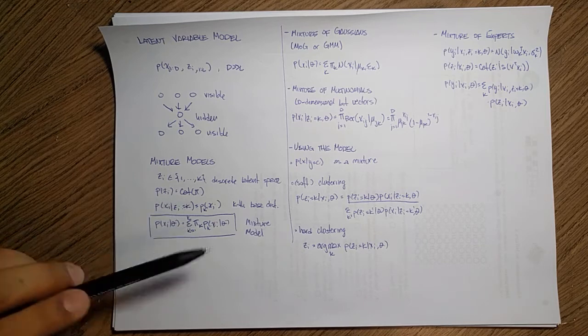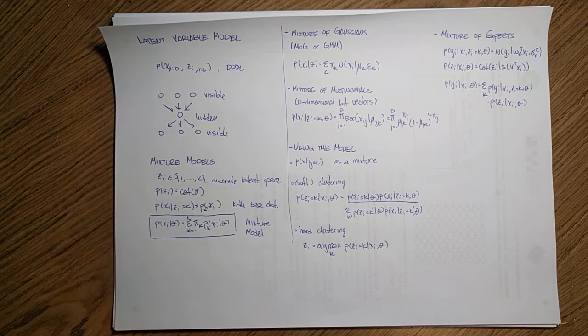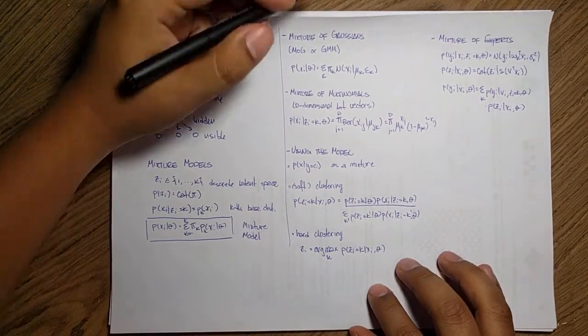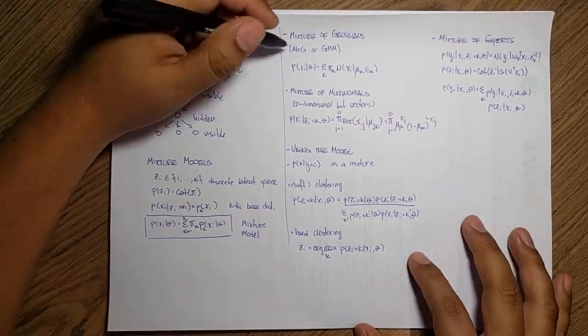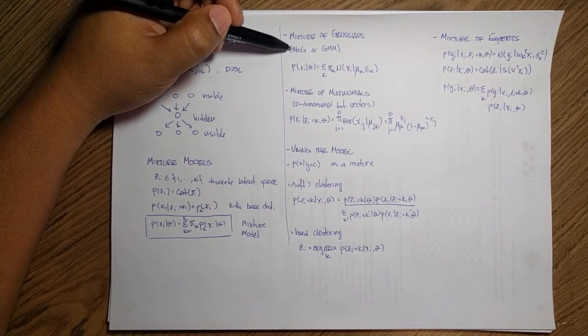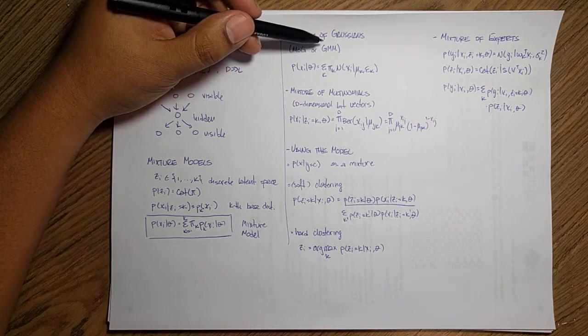And yeah, that's it. As you see, it's a really simple idea, but really useful. One of the most used models is this mixture of Gaussians or MOG or GMM, depending on how do you want to call it. Like this is a mixture of Gaussians or a Gaussian mixture model.